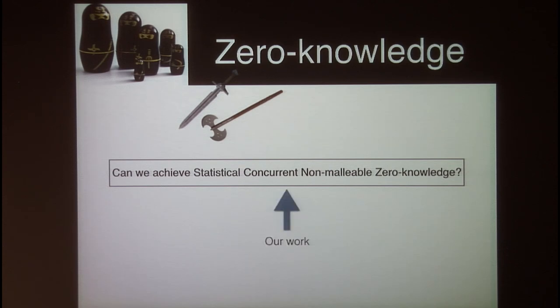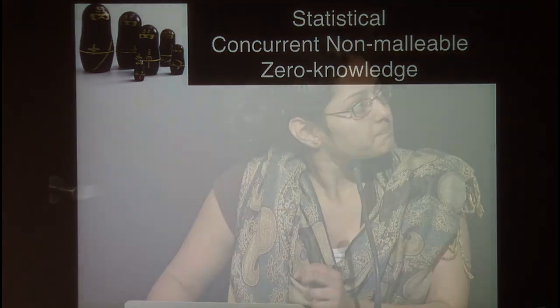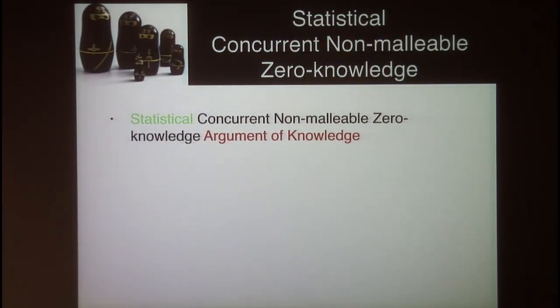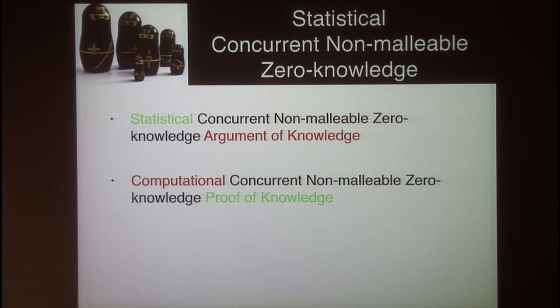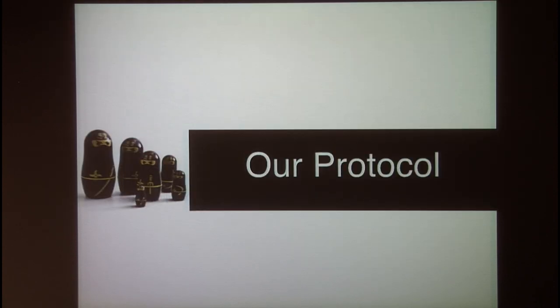This is the question we pursue in our work. Note that we are hoping to achieve statistical concurrent non-malleable zero knowledge, so we can only hope for an argument of knowledge. An orthogonal direction — achieving computational concurrent non-malleable zero knowledge proof of knowledge — was pursued by Lin, Paas, Seng, and Venkita Subramaniam at Crypto 2010.